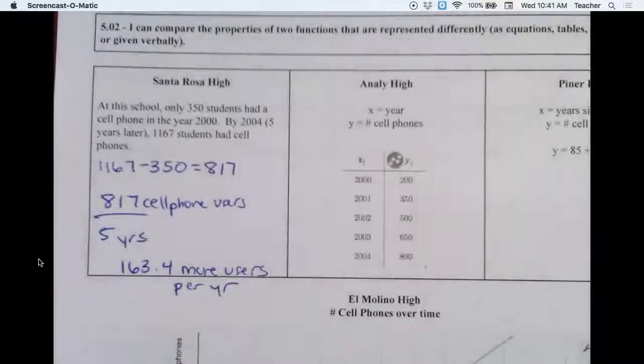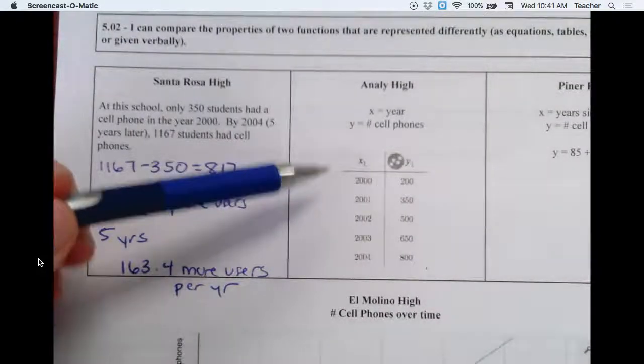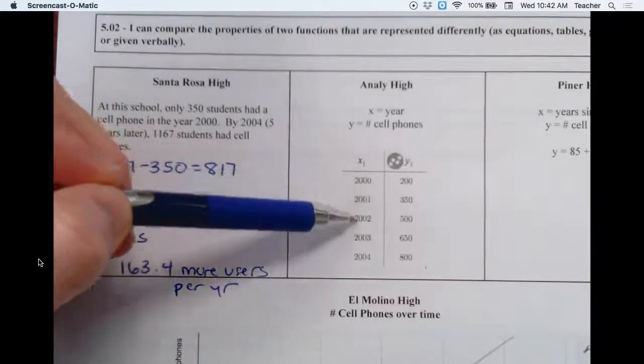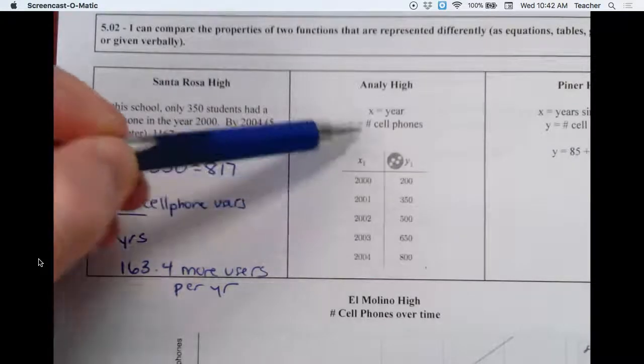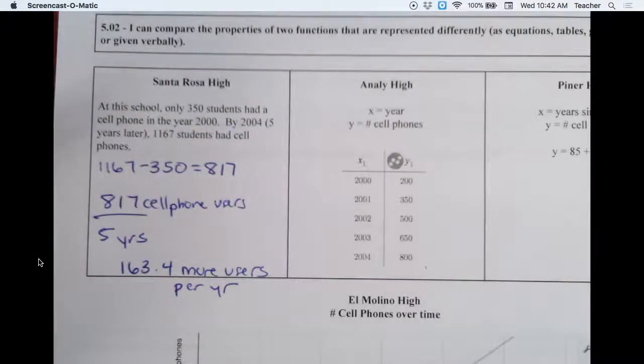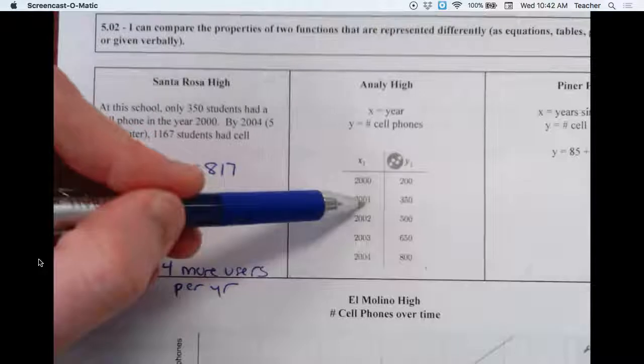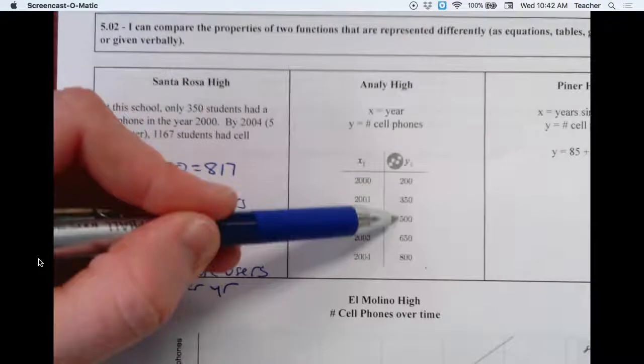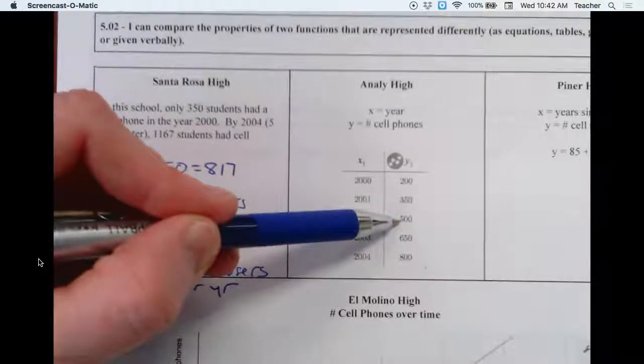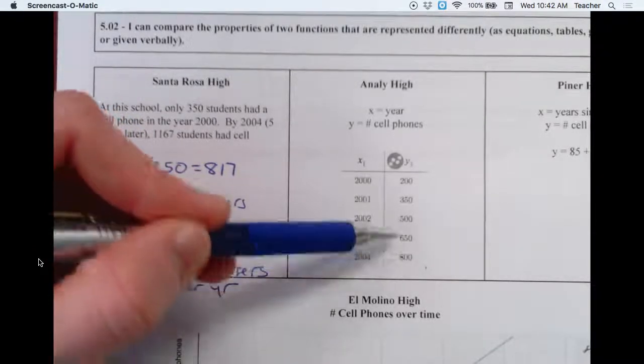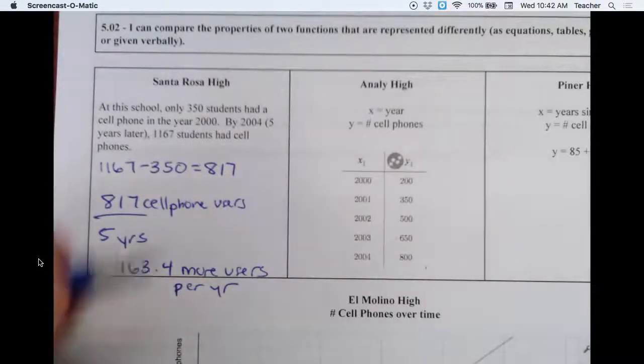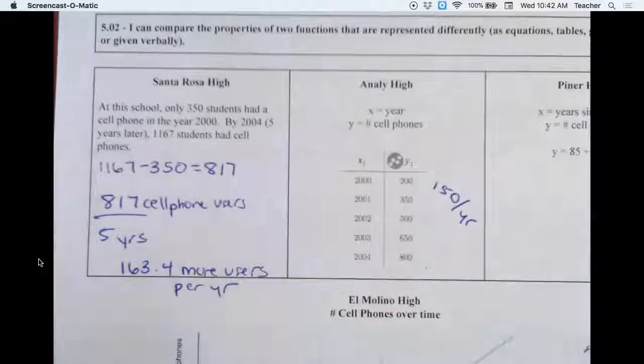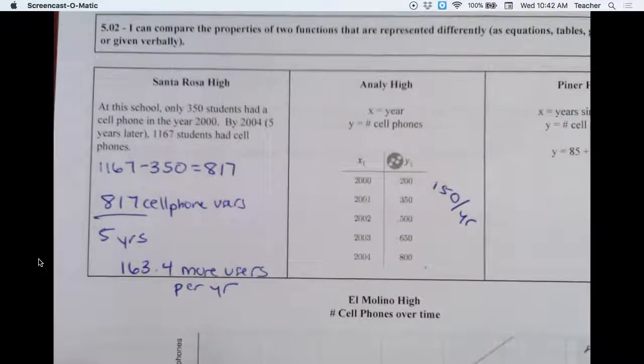Now let's look at Annaly. We have to interpret this. We have X is years - a year - 2001, 2, 3, 4, 5 years worth. And we have number of cell phones. From 2000 to 2001, it looks like we went up 150. Another 150. How nice. It looks like we went up 150 each year. So no calculations had to be done here. So this is 150 per year, 150 more users per year.